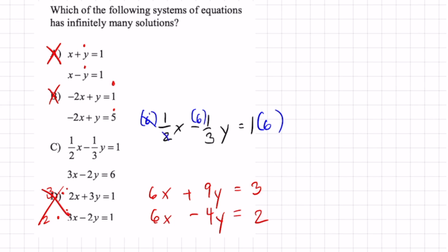6 over 2 is 3, 3 times 1 is 3x. 6 over 3 is 2, 2 times 1 is negative 2y, and 1 times 6 is 6. You can see that this equation matches the one right below and that is why it is infinitely many.